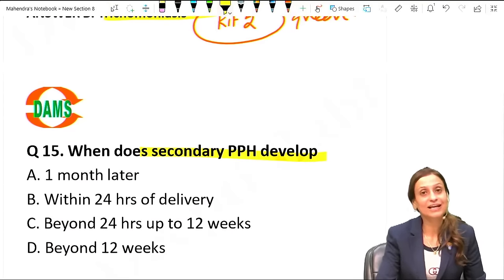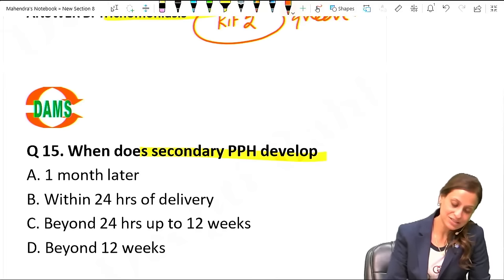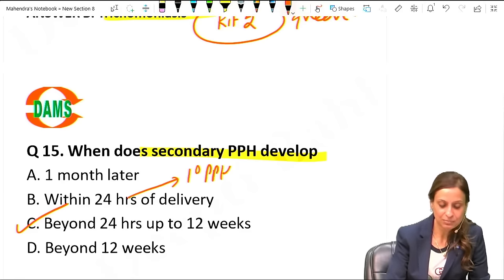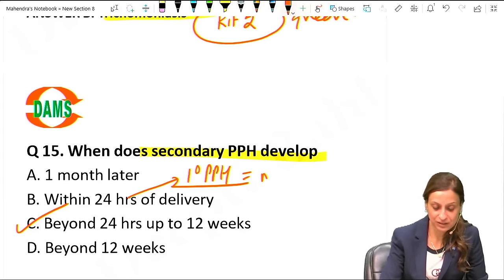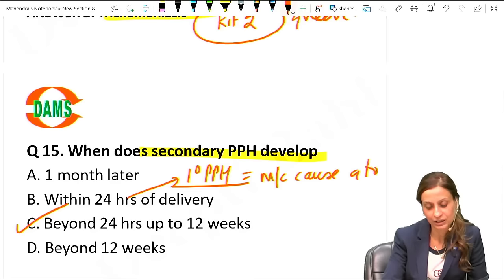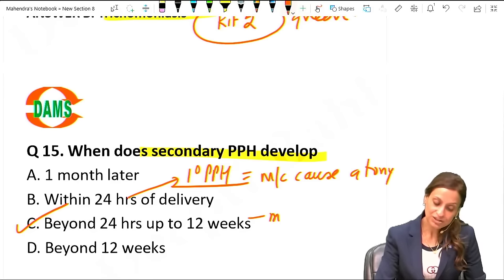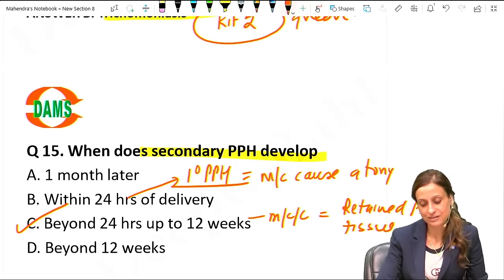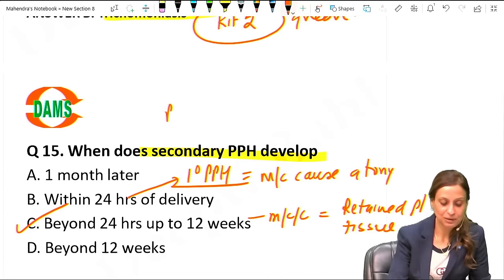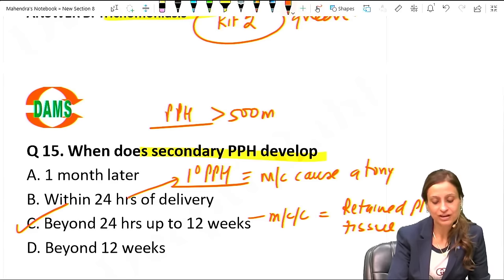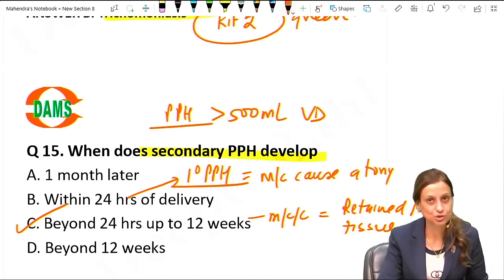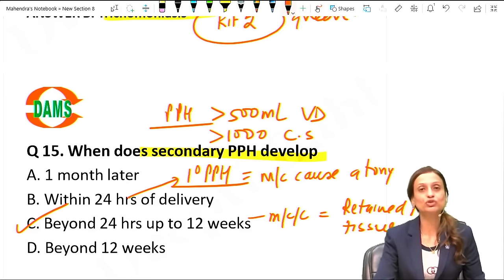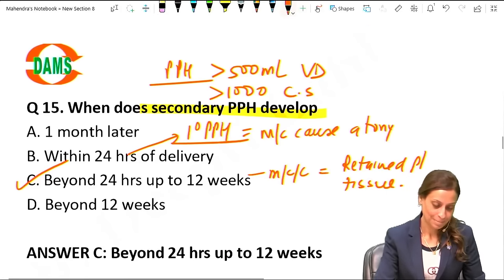Secondary PPH develops beyond 24 hours up to 12 weeks postpartum. Primary PPH occurs within 24 hours and its most common cause is uterine atony. Secondary PPH's most common cause is retained placental tissue. PPH is defined as more than 500 ml blood loss after vaginal delivery; the definition changes to more than 1000 ml for caesarean section.